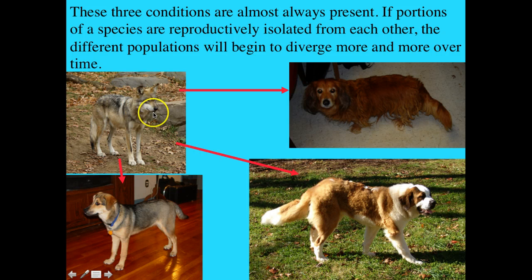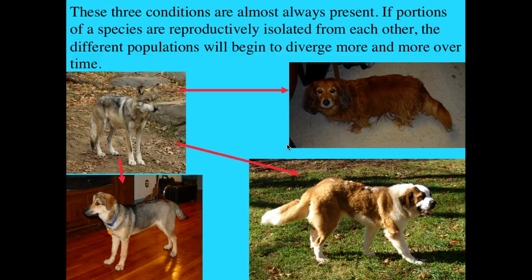A long while ago, a species very similar to a modern-day wolf gave rise to all of the different breeds of dogs. Each breed of dog is still the same species, but given more geographic isolation and reproductive isolation — as we keep essentially forcing breeding within just one breed of dog — they may diverge to the point that they're no longer the same species.